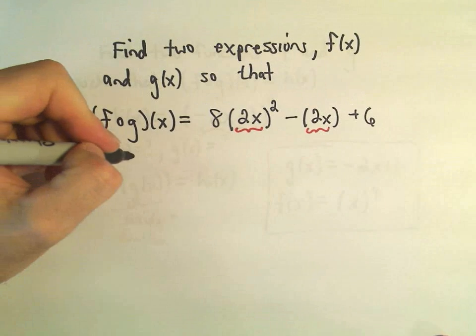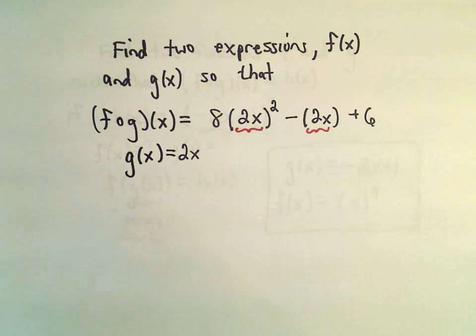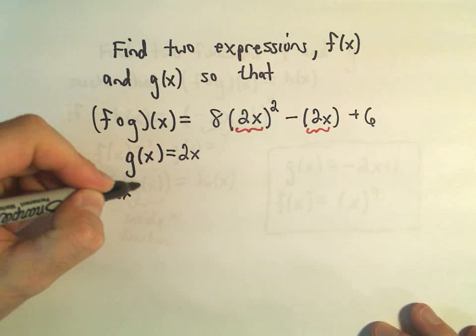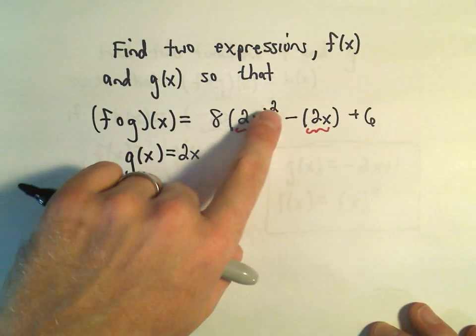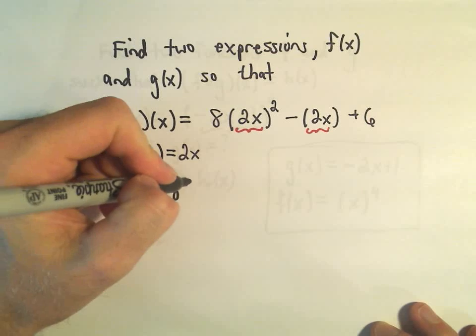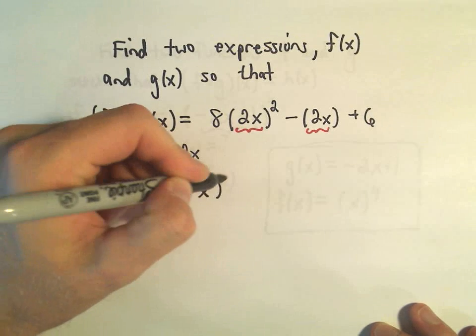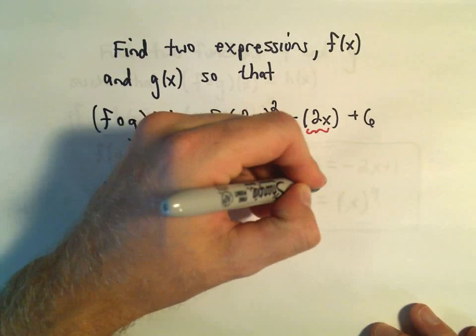I'm going to let g(x) just equal 2x. And correspondingly, I'm going to let f(x)—well, I want a function that takes this 2x and squares it and subtracts away that 2x. So I think if we take 8x² and then if we had minus x + 6,